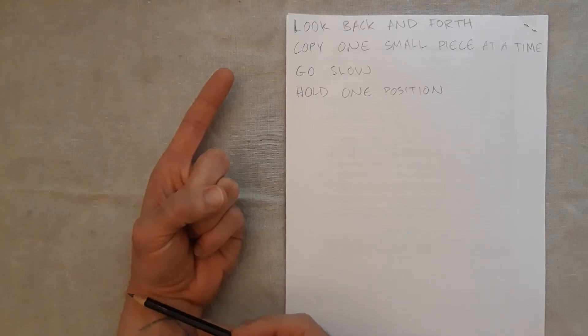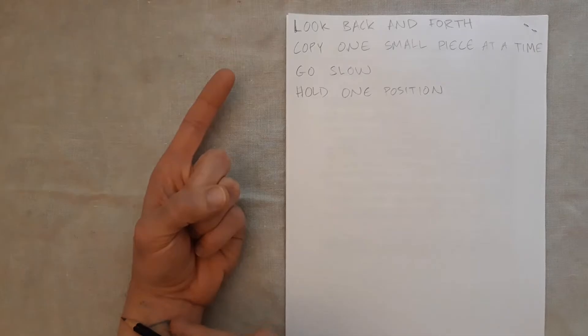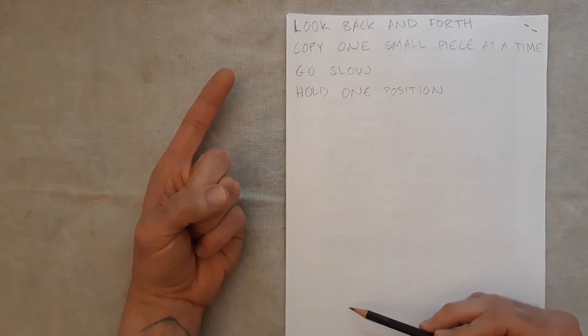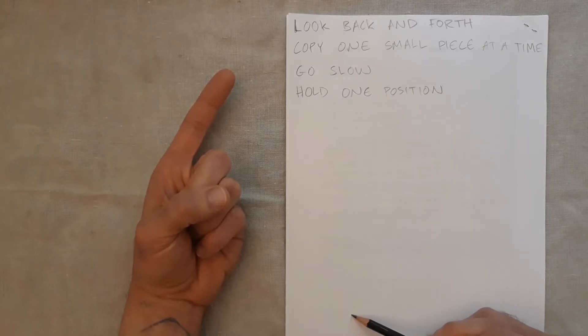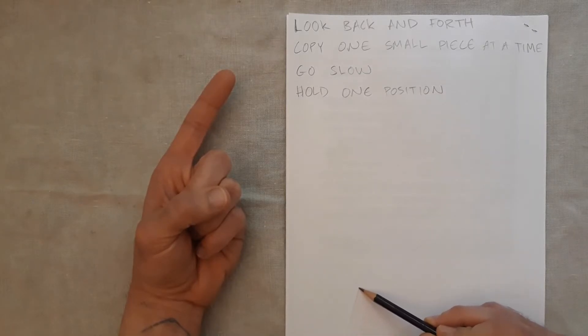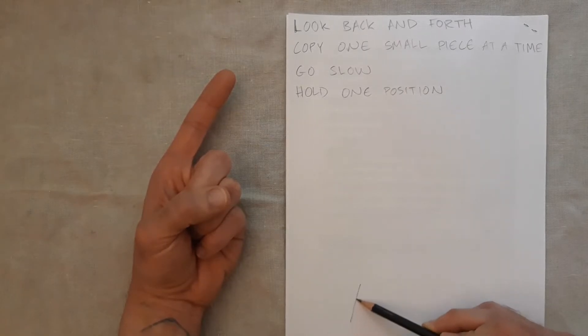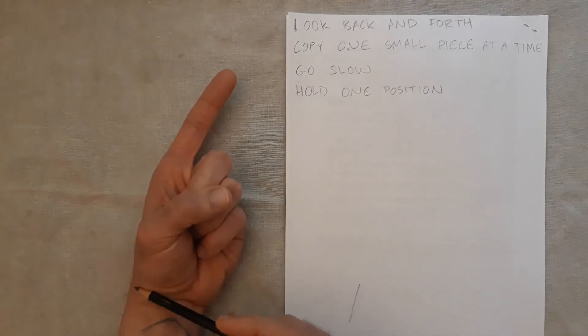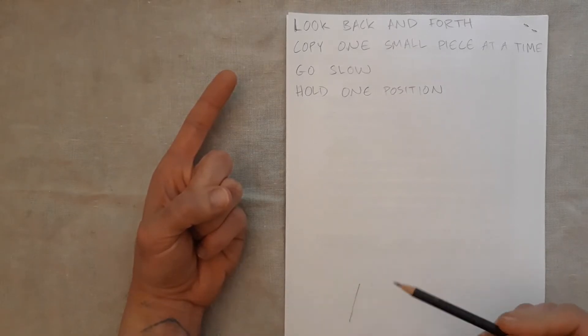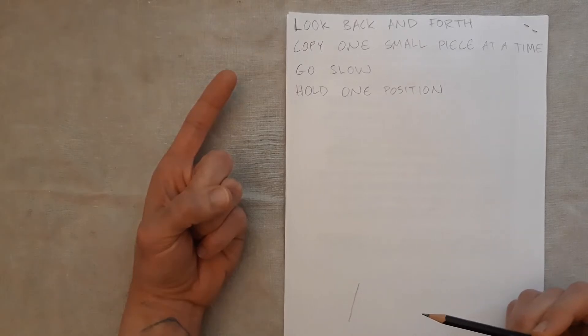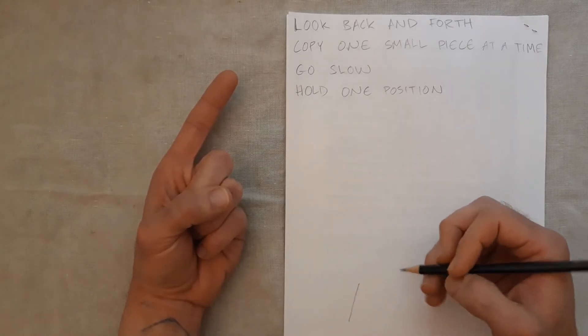So let's start down here at the wrist. Looking at one little piece at a time. I'm just going to make this small line here. I'll choose the next small line that I can build off of that. I see it's a little bit angled, it's not quite straight up. So I've copied the angle and the length of this section of my wrist, just with one simple line, just looking carefully at that angle and size.